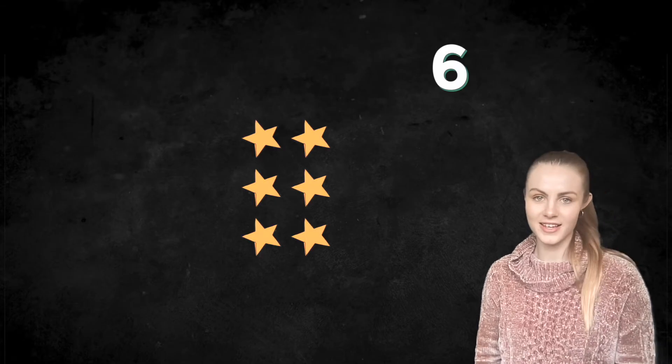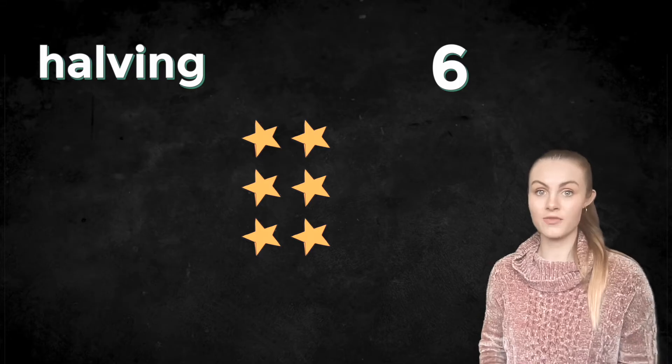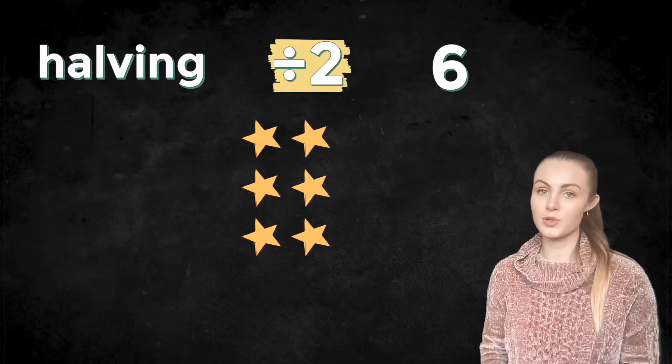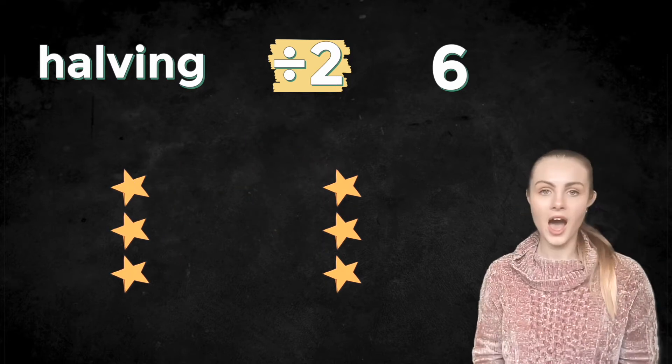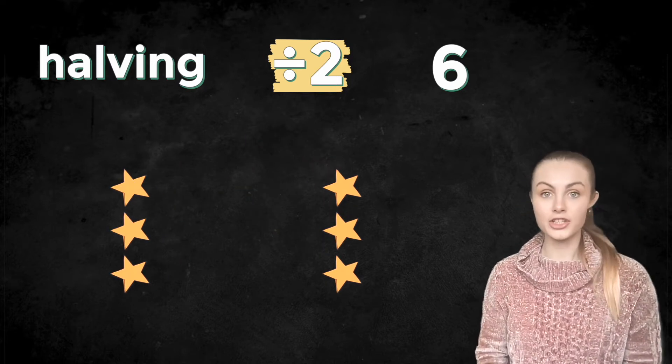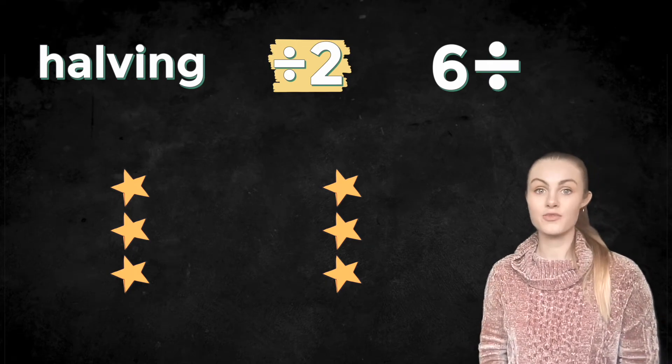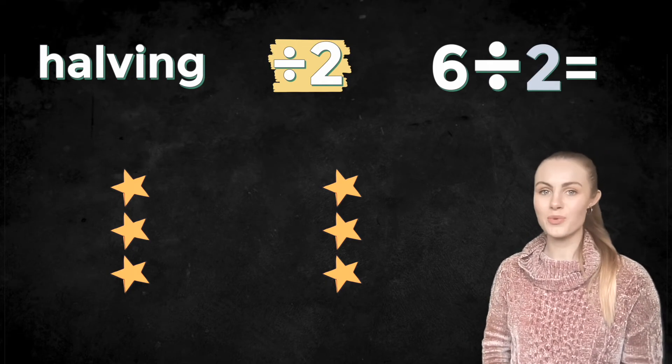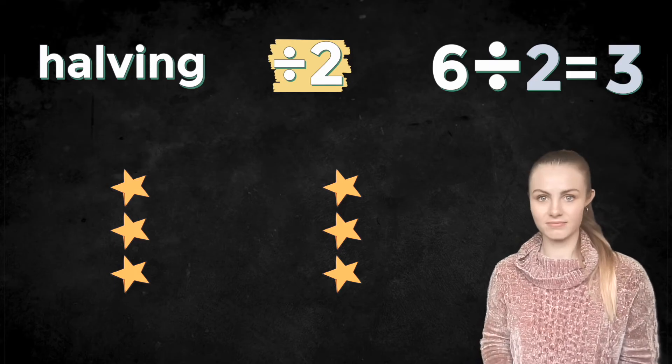Let's look at another example. Six. And let's represent this with six stars. I'm going to start by halving. And I know that means the same as dividing by two. So let's share my six stars between two equal groups. I can see that there are three in each group. So now we write that as a number sentence. Six divided by two equals three. So that means I've halved the number six. Great.